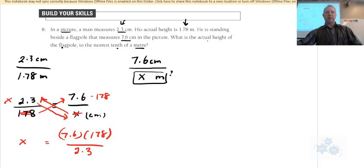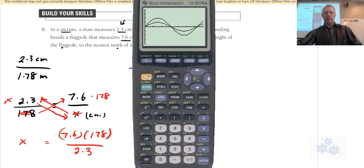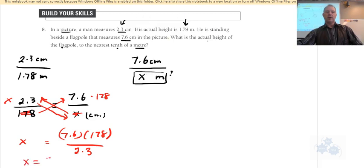So x equals 7.6 times 178 divided by 2.3, is 588.1, we'll go 17. So x equals 588.17, that's going to be centimeters, right? So the question asks for this measurement in meters.